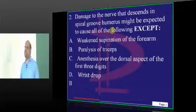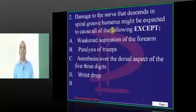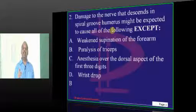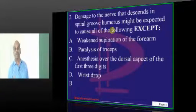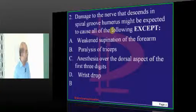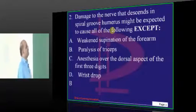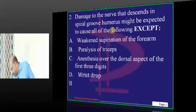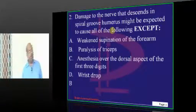Now, coming to the triceps, it is definitely supplied by the radial nerve. But the branch to the triceps is given by the radial nerve before it enters the spiral groove. That is the fix about this question. There will be no paralysis of the triceps is what I want to underscore to all of you.